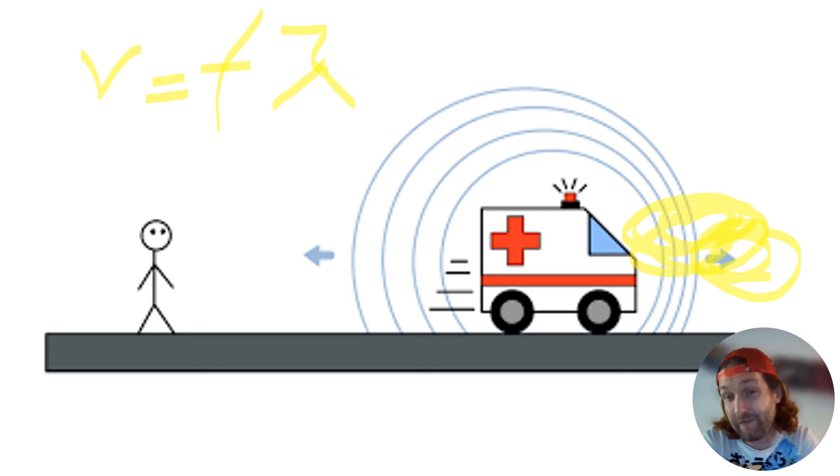V equals F lambda. V being the wave speed, F being the frequency of the wave, and lambda being the wavelength of the wave. That wave speed isn't changing. This is still taking place in air, that wave's going to be traveling at air, 20 degrees, 343 meters per second.